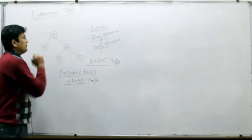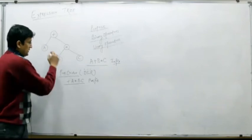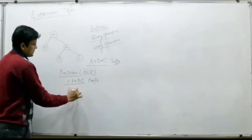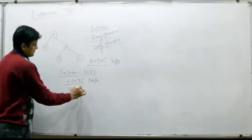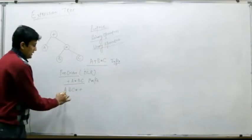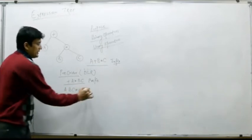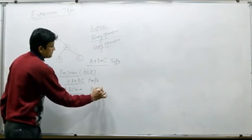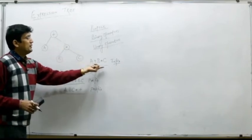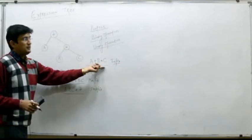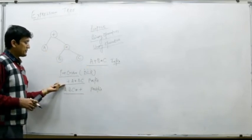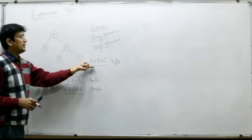Similarly, if you perform the post-order traversal on this tree, the post-order will result in B, C, multiplication, A, B, C, multiplication, and plus. This is the post-fix equivalent of the given expression. So we have built an expression tree with the help of this infix expression, for the purpose of computing the prefix and the post-fix of the given arithmetic expression.